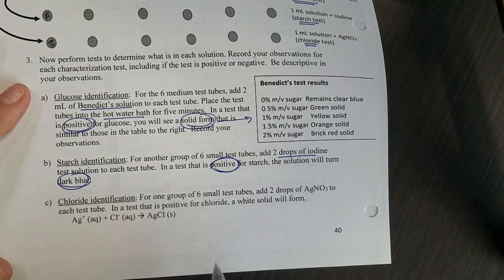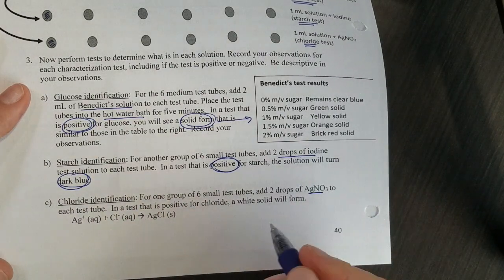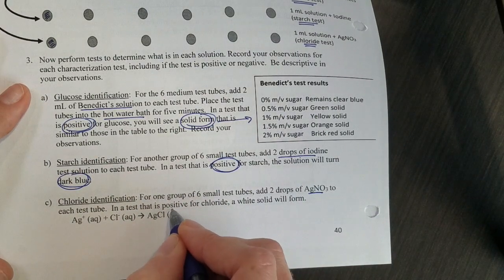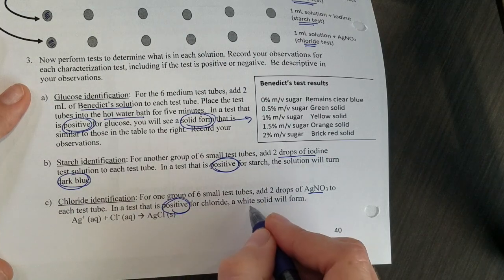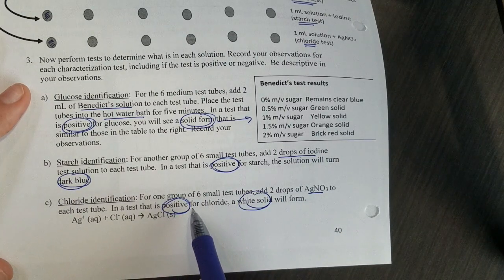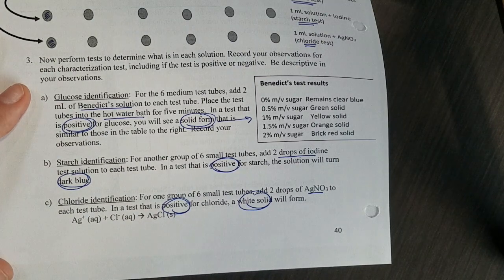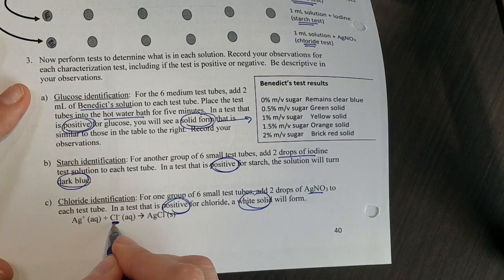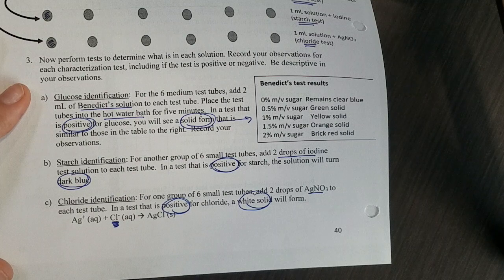Lastly with chloride we're going to add silver nitrate and if it's positive for chloride we will see a white solid form. Sodium isn't very reactive so it's easier to test for chloride moving, and we would assume the sodium moved with it.